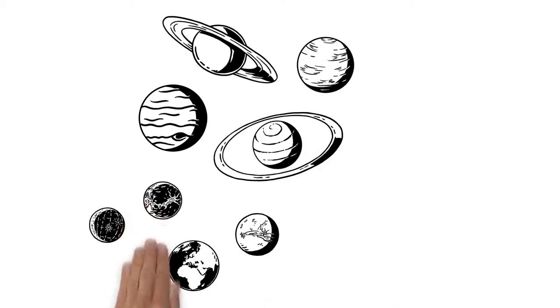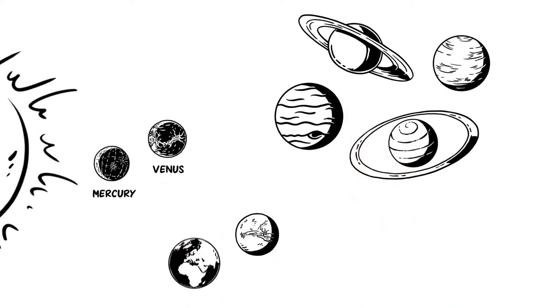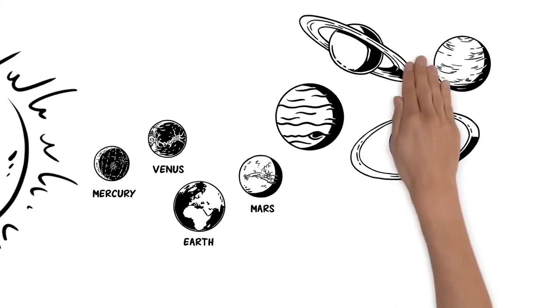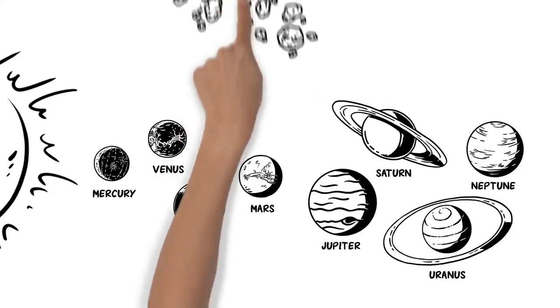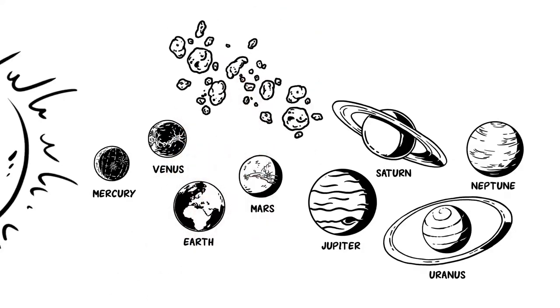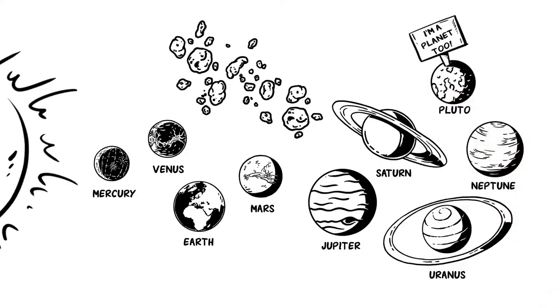Eight planets orbit the sun. The inner ones are Mercury, Venus, Earth, and Mars. And the outer planets are Jupiter, Saturn, Uranus, and Neptune. The asteroid belt, and the so-called trans-Neptune objects, like the dwarf planet Pluto, are also revolving around the sun.